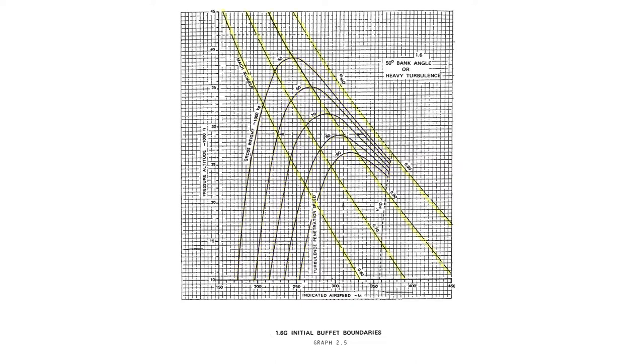These diagonal lines represent the mach numbers flown but they're rarely used. This thick line down the middle however is pretty important. This represents the turbulence penetration speed.